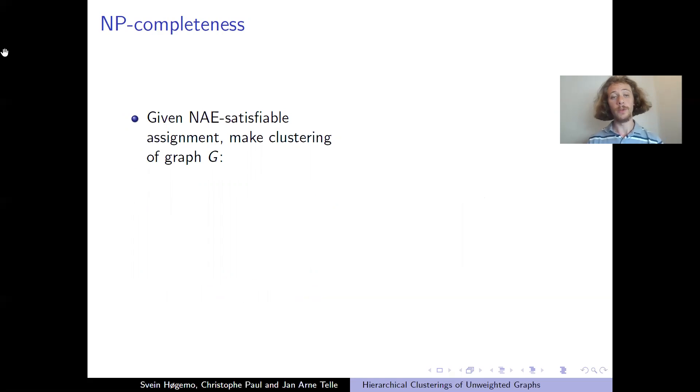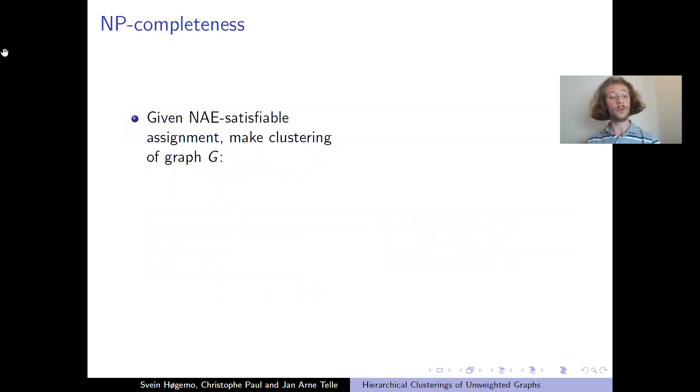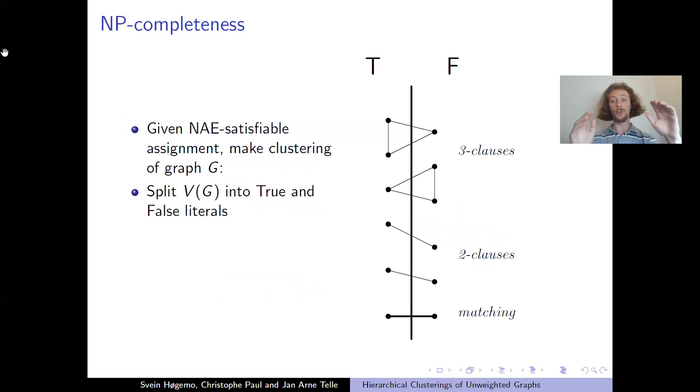And given an assignment, well, this graph here has no not-all-equal-satisfiable assignment, which is easy to see. But for an instance with a not-all-equal-satisfiable assignment, we can make a clustering this way. First, we just split the graph into two halves, one for the true variables and one for the false variables. And this ensures that nearly all edges are cut at the top.